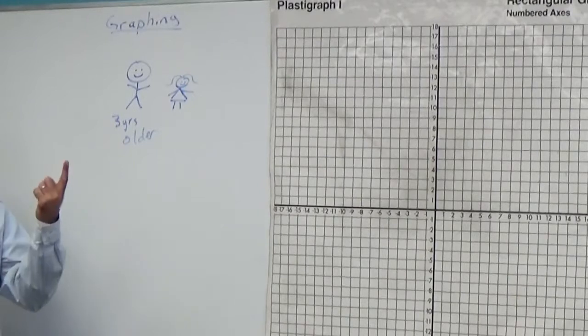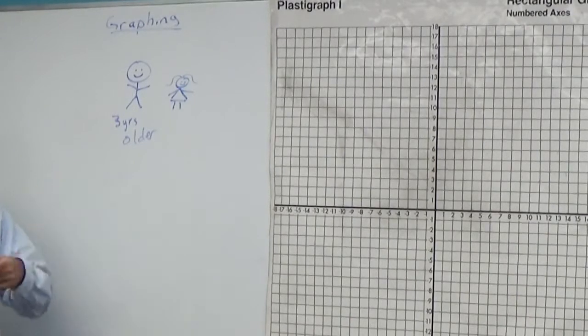So if Ellen was one, how old is Dylan? Four. Four.